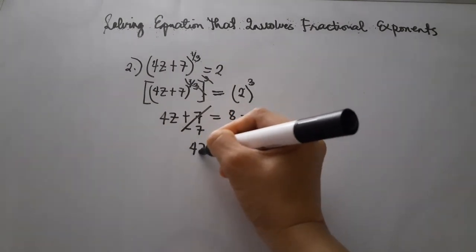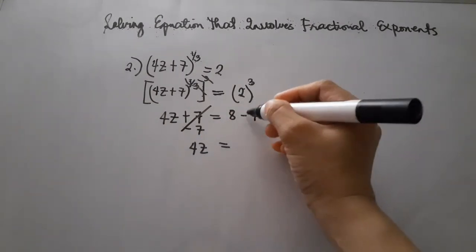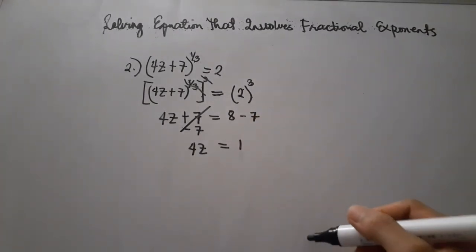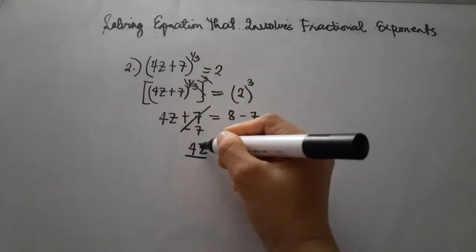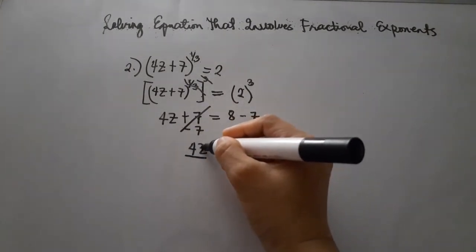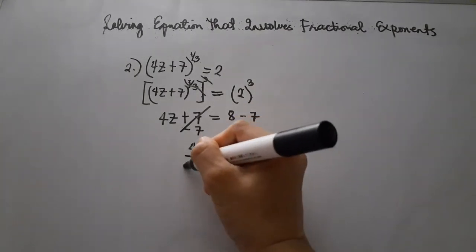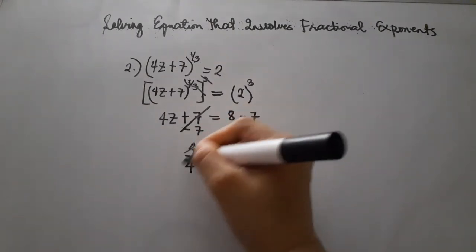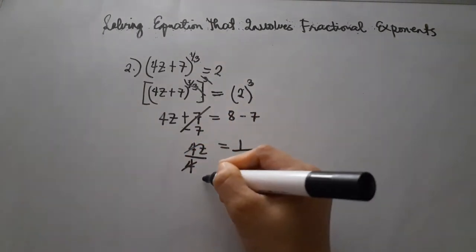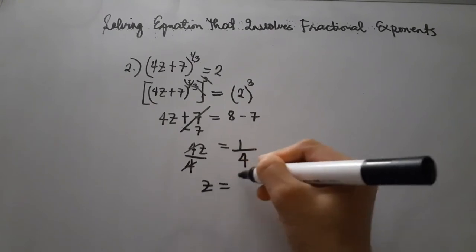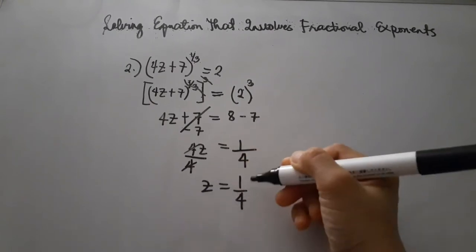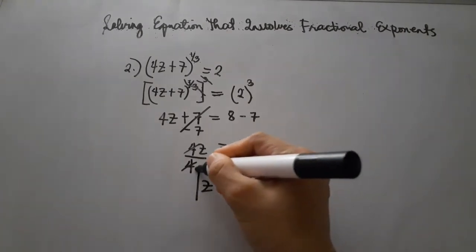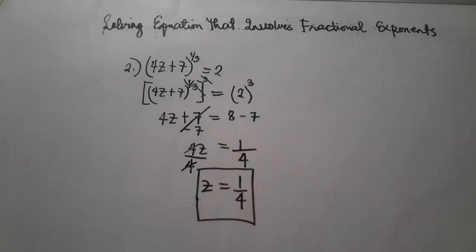After canceling the 7, we have 4z remaining on the left, and 8 minus 7 equals 1 on the right. To solve for z, we divide both sides by 4. Therefore, our answer is z equals 1 fourth.